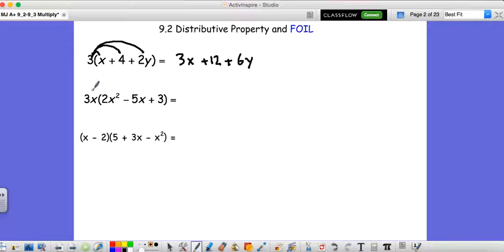We can even do it when we have something like this. 3x, we're going to bring 3x times 2x to the 2nd, 3x times negative 5x, and 3x times 3. Remember, when we're multiplying exponents, if we have 3x times 2x squared, that's going to give us 6x to the 3rd power.